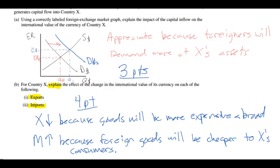That wraps up our second video lesson on how to succeed on the AP Macroeconomics free response exam. Watch these lessons a couple of times and try to determine how many points each part of a free response question is worth. Read the prompt carefully — if you are asked to explain, it's going to be worth more points. If you are asked to indicate, it's probably only a one-point question. Do not attempt to explain something if you are only asked to indicate, because if your explanation is wrong it may reduce your chance of getting the question right even if you indicated the correct change. Go to econclassroom.com for more tips, videos, definitions, and flashcards for studying for the Macroeconomics exam.